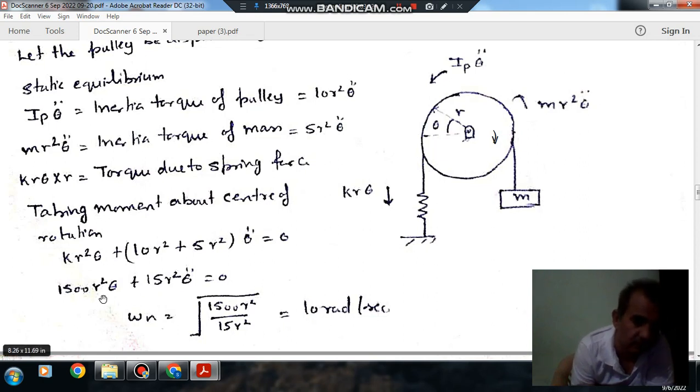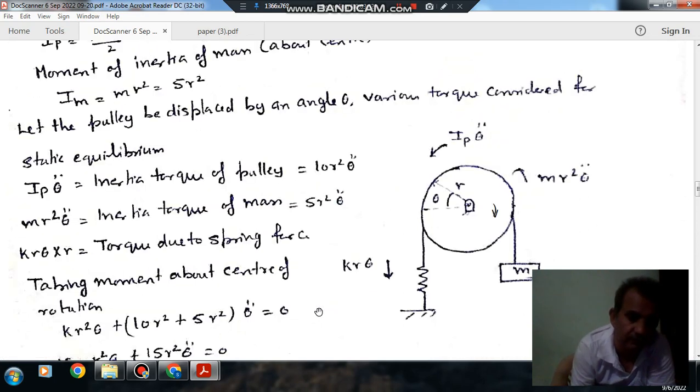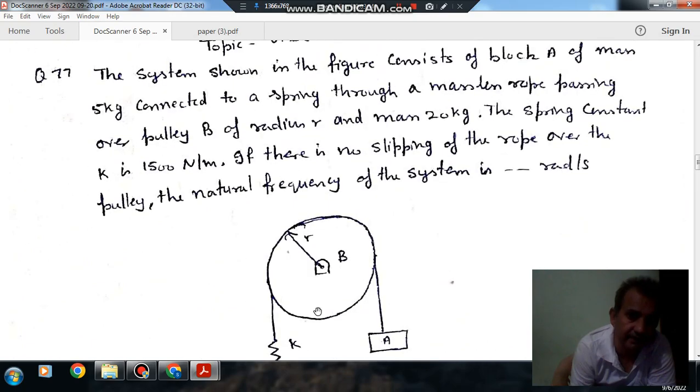So that is the general formula. The coefficient of theta will be taken as numerator and coefficient of theta double dot will be taken as denominator, so its root will be 10 radians. So answer is 10 radians per second.